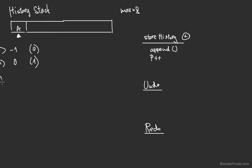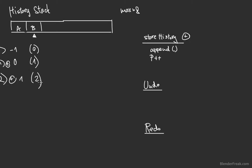If we do that again, we append a new item and again increase the pointer, so in this case the pointer is going to be one and the length is going to be two. Already you can see that the pointer should always be less than the length of the history stack itself.